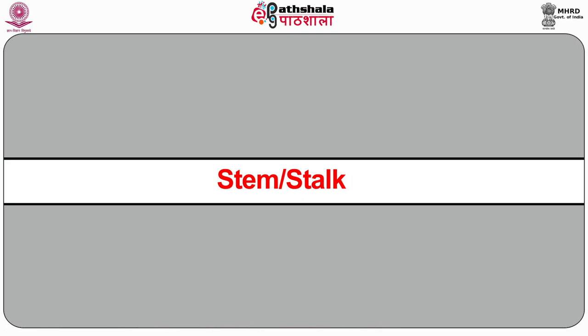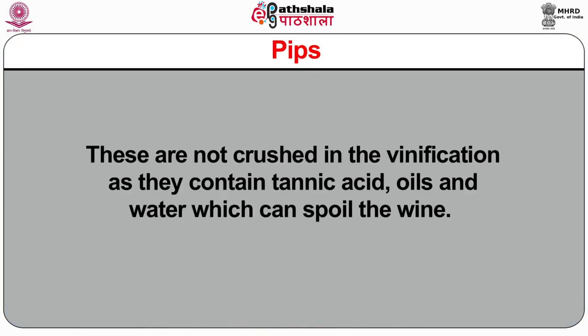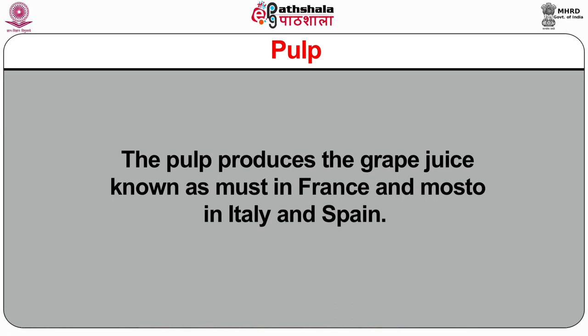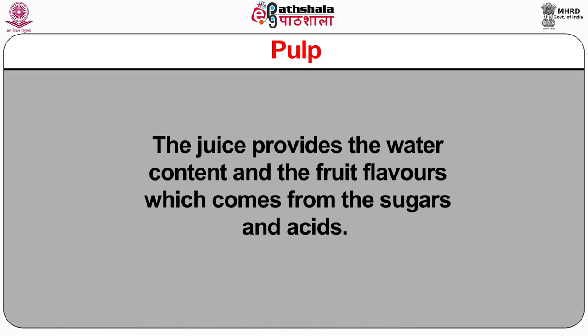Stem or stalk: the stalks are usually removed before the grapes are crushed or pressed. Previously, the stalks were left on the grapes for red wines, which increased the tannin content. Pips: these are not crushed during vinification as they contain tannin acids, oils and water which can spoil the wine. Pulp: the pulp produces the grape juice known as moût in France and mosto in Italy and Spain. The juice provides the water content and fruit flavor from sugar and acids. Sugar content dictates the alcoholic level and acidity or sweetness in the wine, and the pulp supplies the sugar required for fermentation.